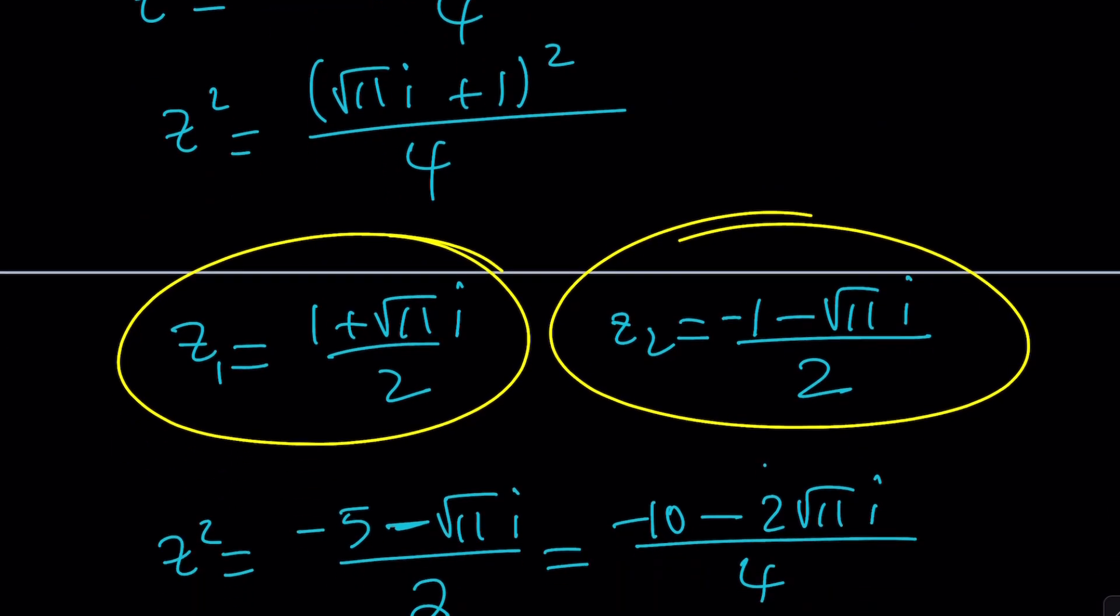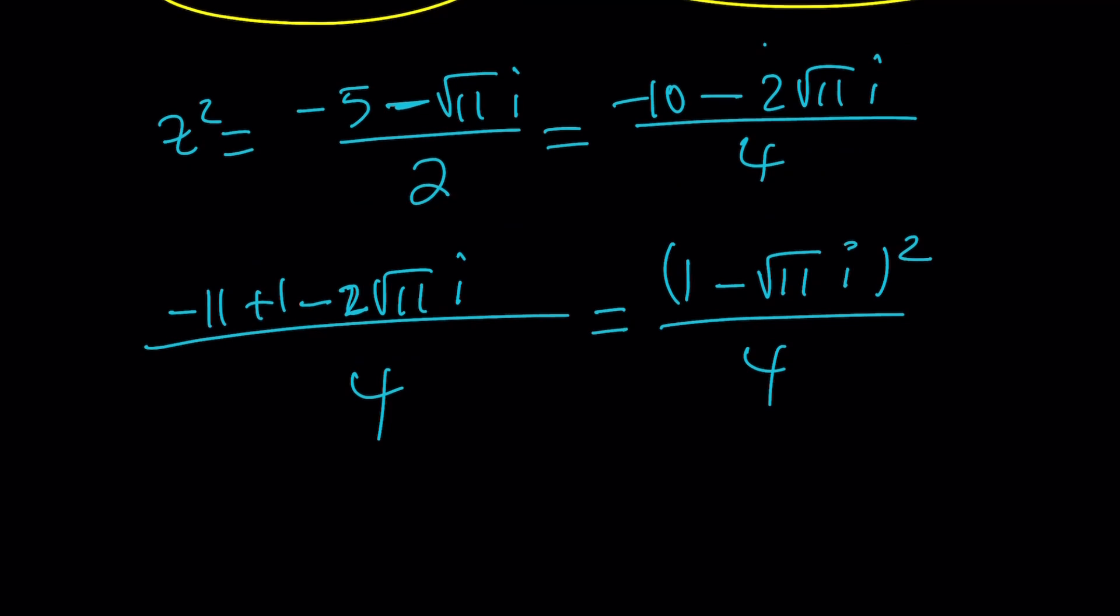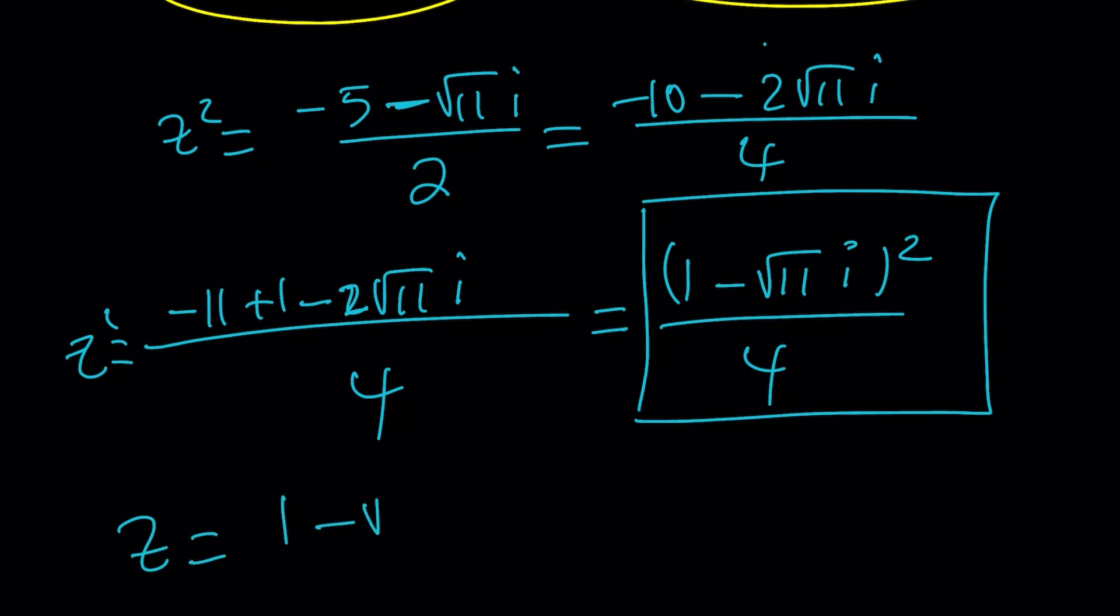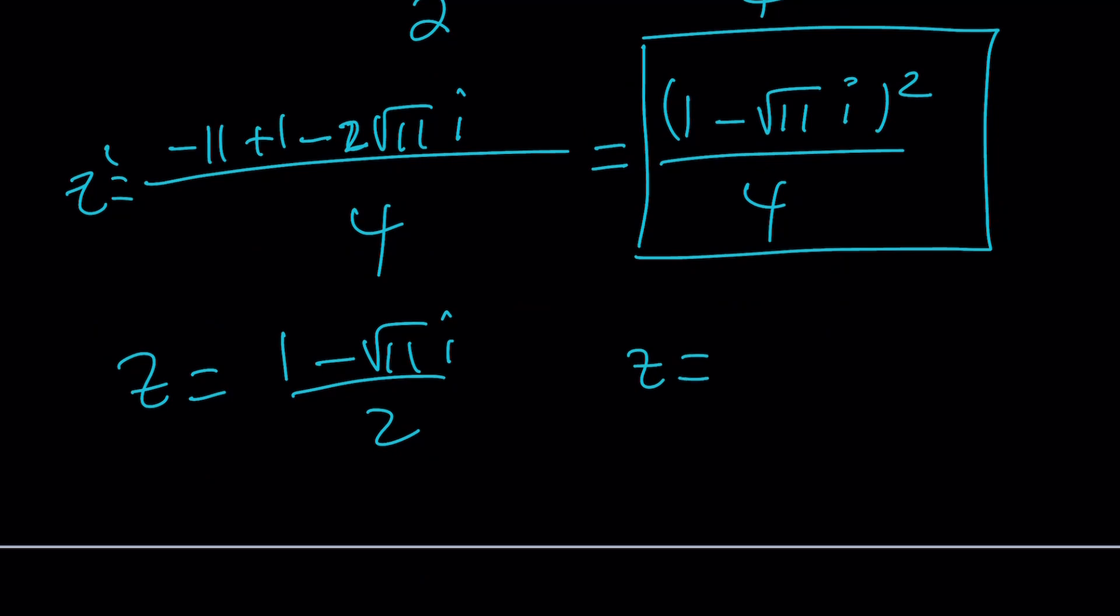Now z squared can be written as 1 minus root 11 i over 2 squared, and we can take the square roots from here. z is going to be 1 minus root 11 i over 2, and then the opposite, which is negative 1 plus root 11 i over 2. I'm going to call these z sub 3 and z sub 4.